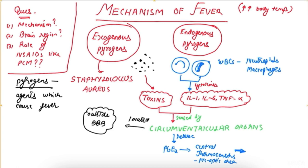This brings about fever or elevated body temperature. So we studied the mechanism of fever and the brain region involved. The brain region is the circumventricular organs, and endogenous and exogenous pyrogens—the toxins and cytokines—cause fever.